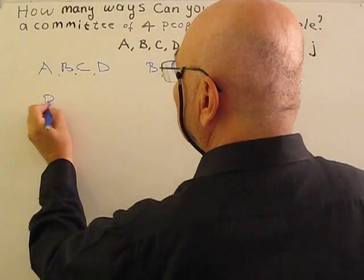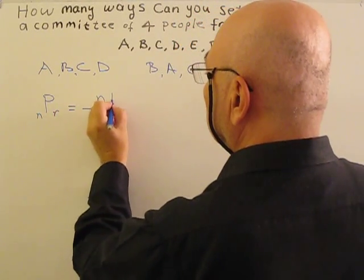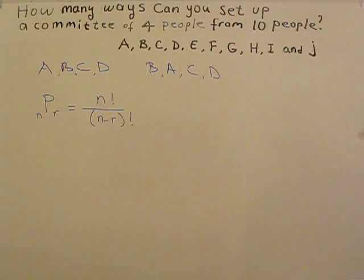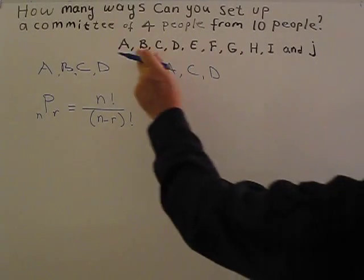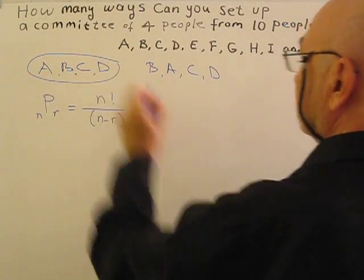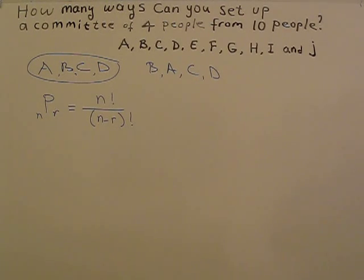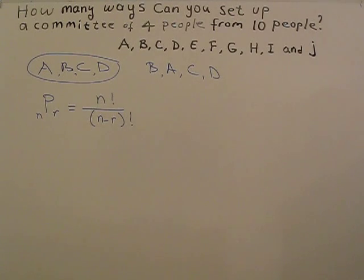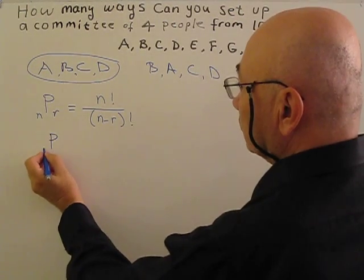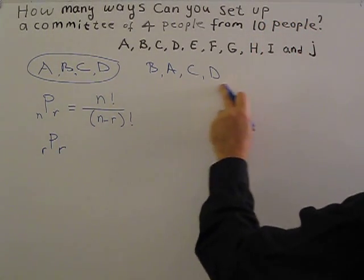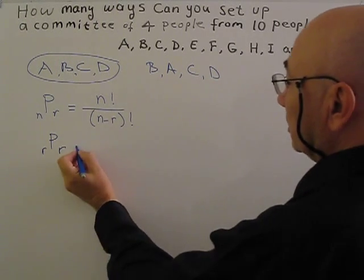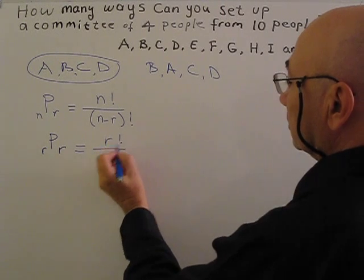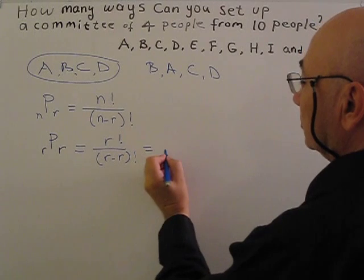As we did before, this is the permutation formula: N factorial over N minus R factorial. How can we construct a combination formula? Let's say we take four people from these ten people. In permutation, order is important, so we will have so many alternatives: B, A, C, D, C, A, B, D like this. How many alternatives we have? Basically, if we use this formula, basically four from four. We arrange four people. Then we use R factorial over R minus R factorial. Denominator one, so R factorial.